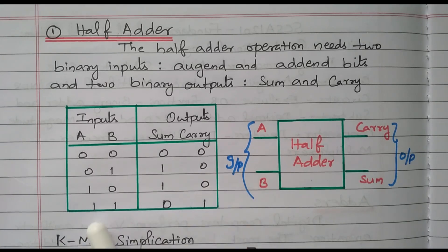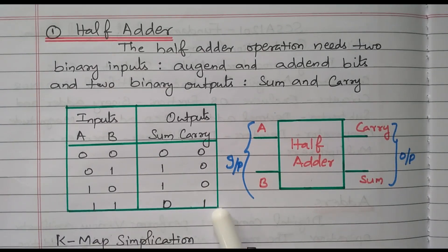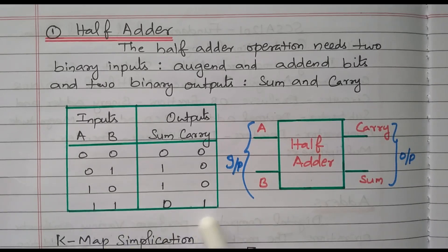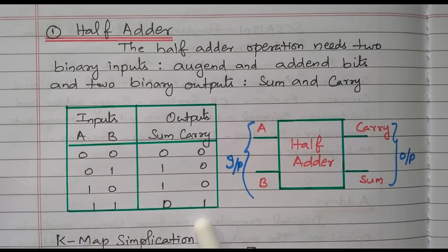But in the fourth combination, 1 plus 1: sum equals 0 and the carry is generated; it should be added with the next digit. So while adding two digits, we need to concentrate on the carry also — it should be added with the next digit. So totally there are three digits: while adding two digits, we need to add the third digit also, that is the carry.